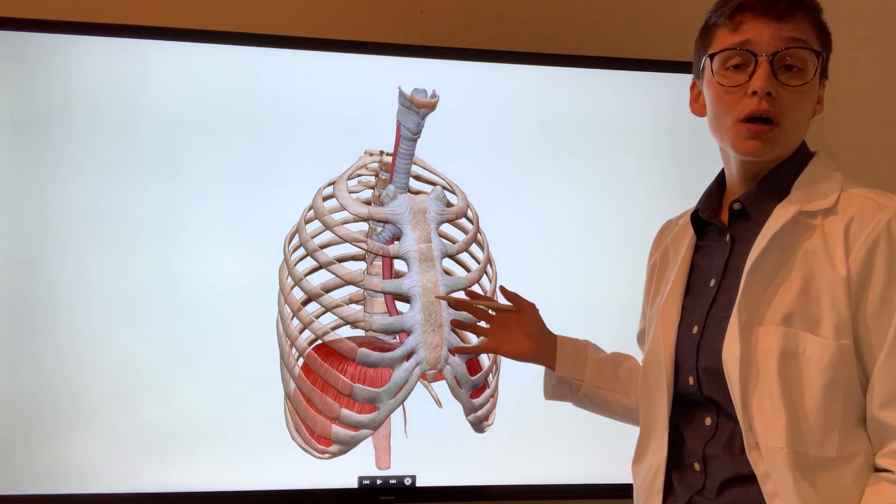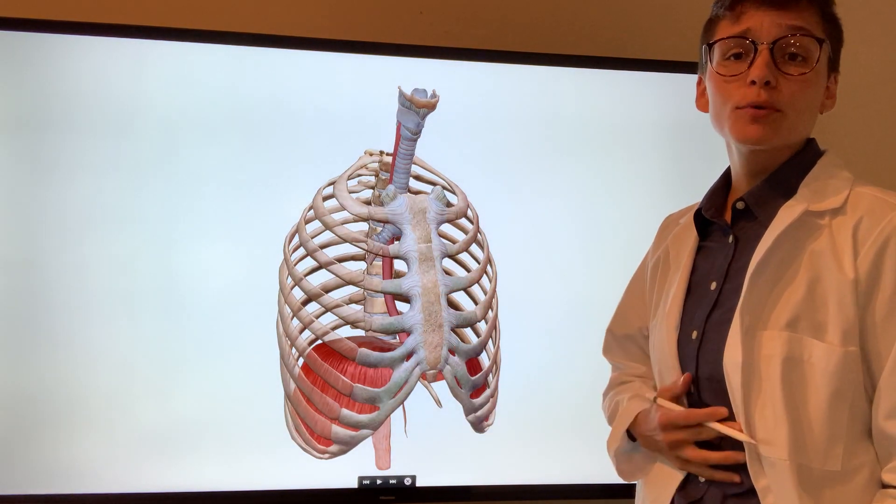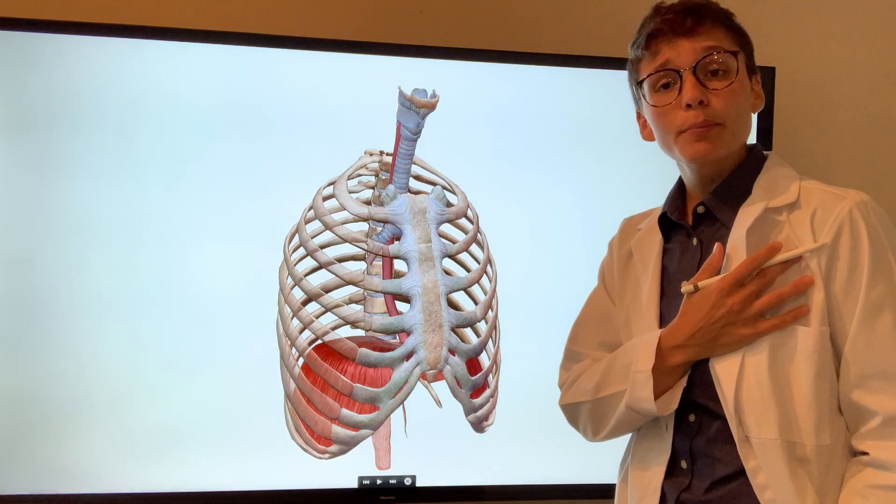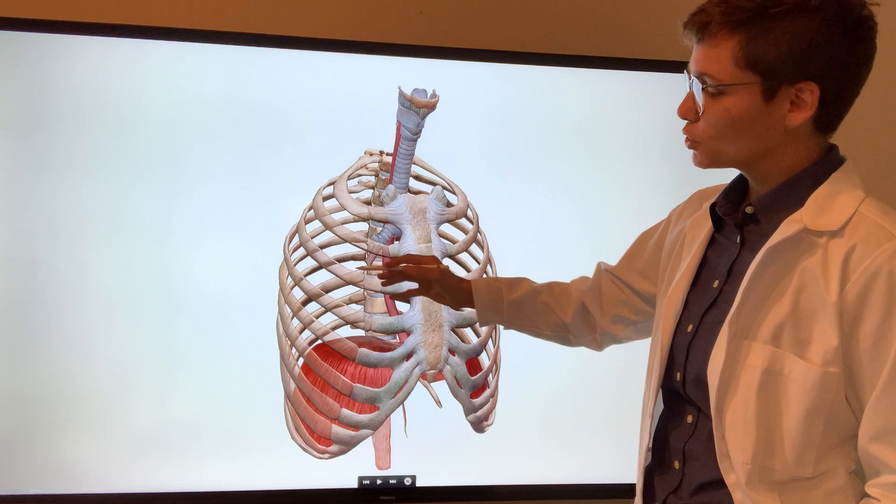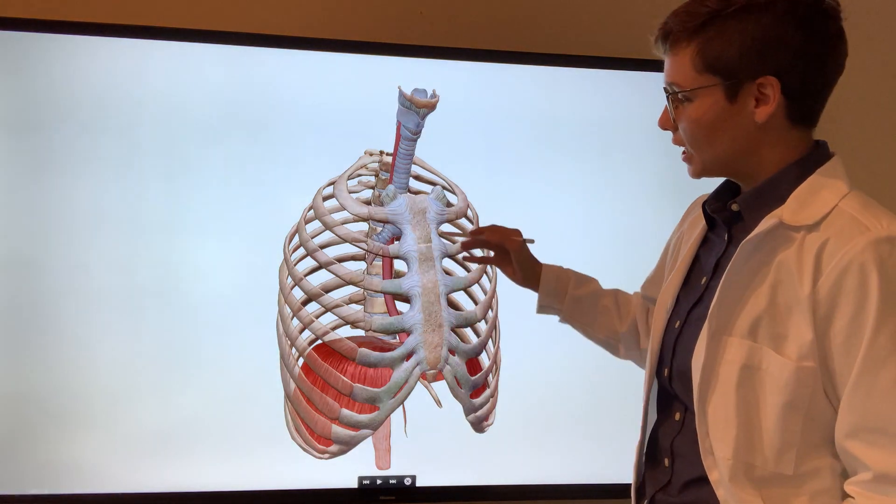The primary function of the thoracic wall is to protect the thoracic and abdominal organs, provide an attachment for the upper extremities, and to aid in respiration. It's comprised of 12 thoracic vertebra, 12 ribs, cartilage, and the sternum.